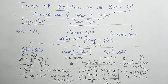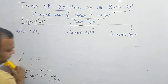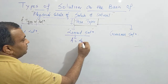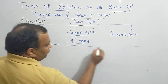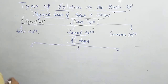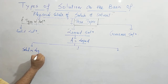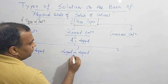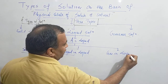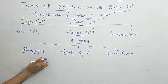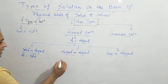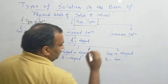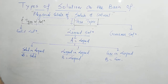So to summarize solid solutions: solid-in-solid — alloys; liquid-in-solid — hydrated salts and amalgam of mercury and sodium; gas-in-solid — dissolved gases in minerals and hydrogen in platinum, palladium, or nickel. Now we will come to the second type, that is liquid solutions — solutions in which the solvent is liquid. On the basis of solute state we classify them into three parts.